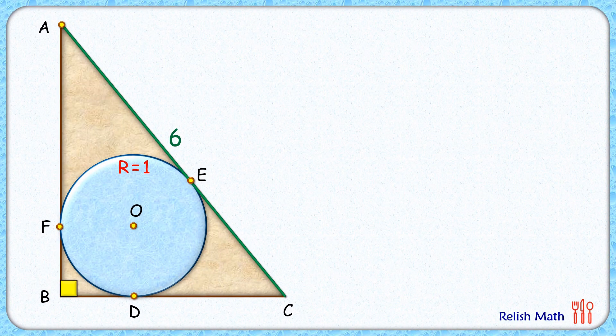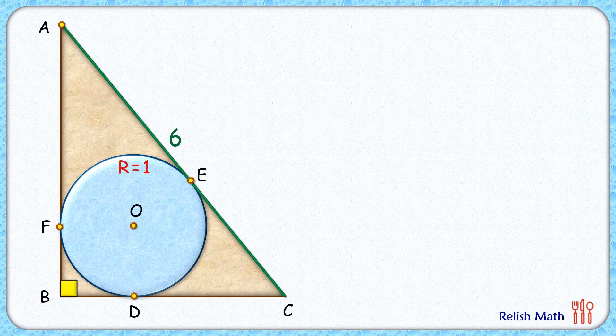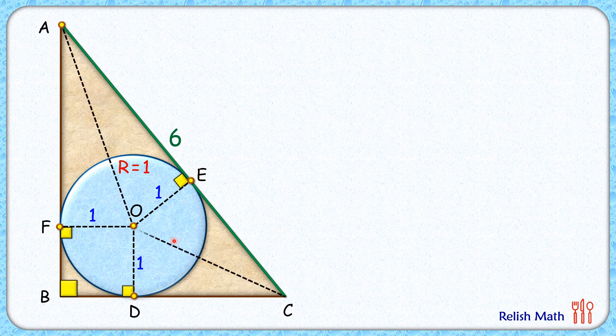We will discuss two solutions for the same question and both are simple and elegant. Let's start by joining OE. So OE is the radius and by theorem we know that radius is perpendicular to the tangent. Same way let's join OD which is tangent to BC and OF, and also let's join the vertex to the center of the circle.